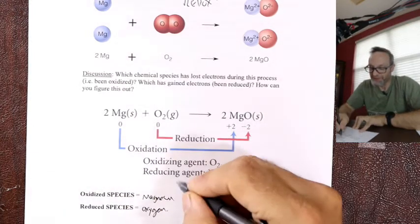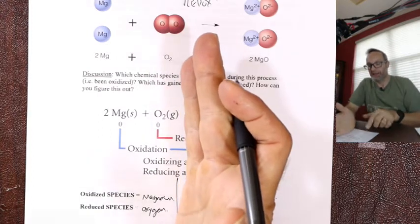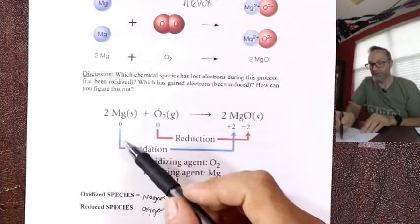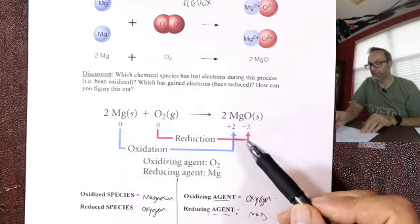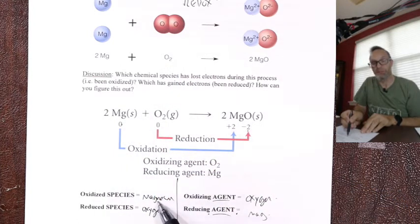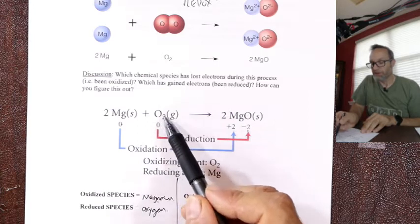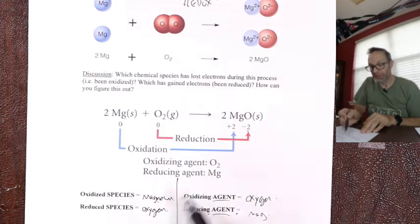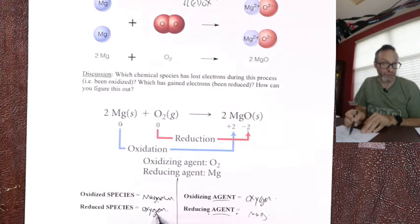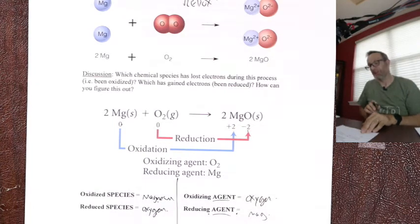My advice is complementary learning. Just learn: oxidation is loss, reduction is gain of electrons. Look at the charges — magnesium went plus, it lost electrons, oxidation is loss. Oxygen went minus, reduction is gain.